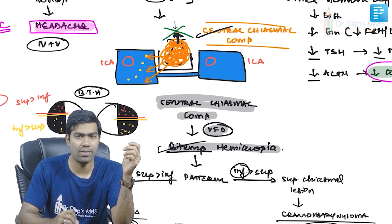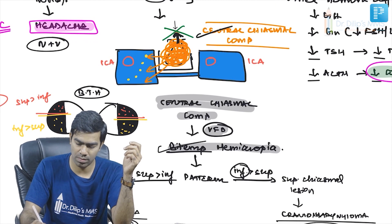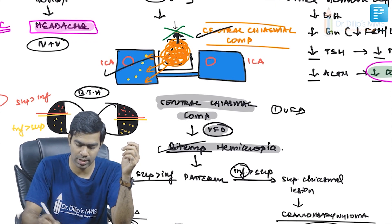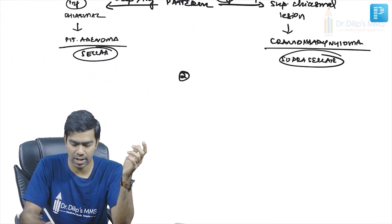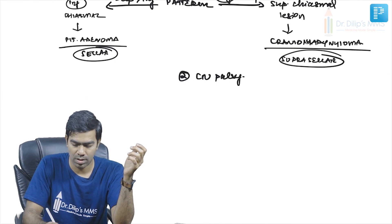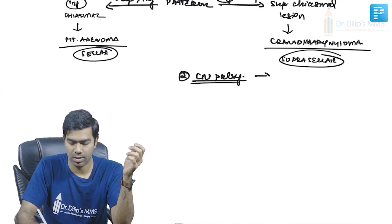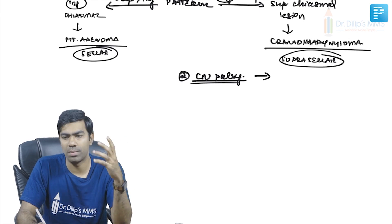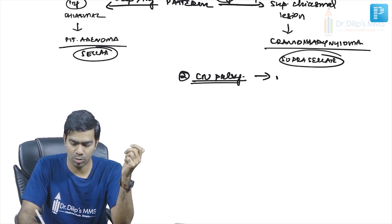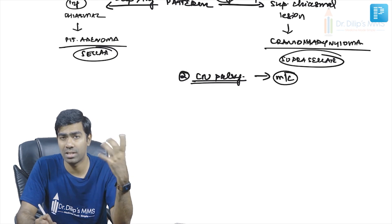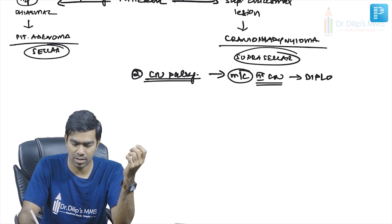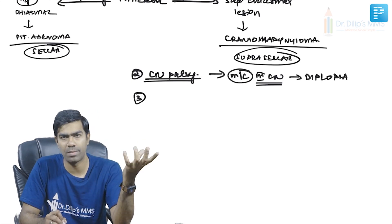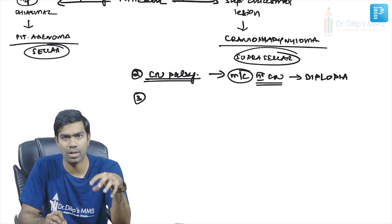Apoplexy can also cause cranial nerve palsies due to compression of the cavernous sinus. The most common cranial nerve affected by an enlarging pituitary lesion is the third cranial nerve, which may lead to diplopia.